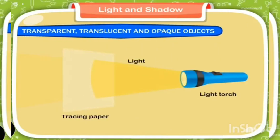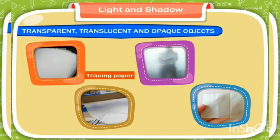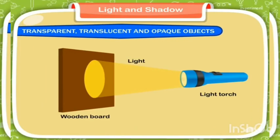Translucent objects are those objects through which only some amount of light can pass. We can see through translucent objects but not very clearly. For example, tracing paper, frosted glass, wax paper, or butter paper.